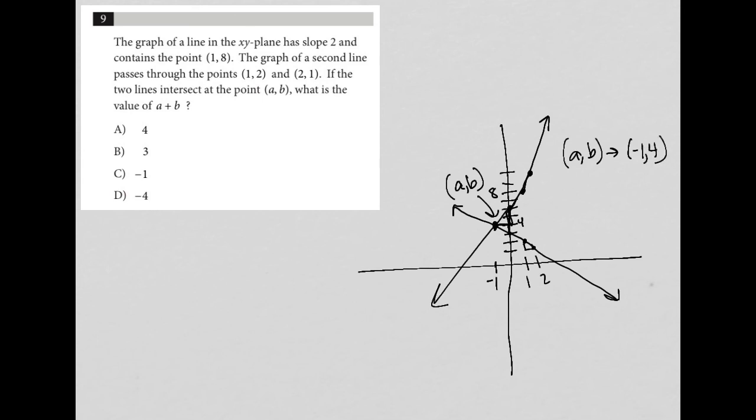So when the question asks what is A plus B, I'm just adding -1 plus 4, which is equal to 3. So that's my final answer. Notice I did all of that based upon the visual graph. So that's the value of using the plug-in picture method here.